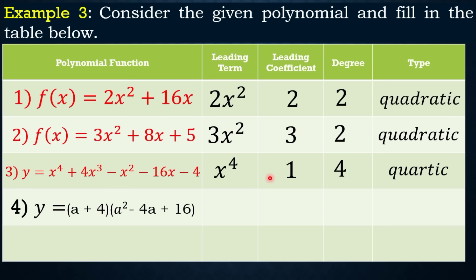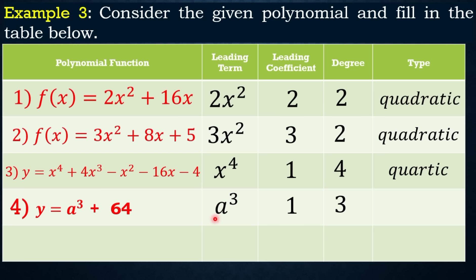For example 4, y = (a + 4)(a² − 4a + 16). This is a sum and difference pattern. When expanded, the answer is a³ + 64. The leading term is a³, the leading coefficient is 1, the degree is 3, and when the highest exponent is 3, we call it cubic.